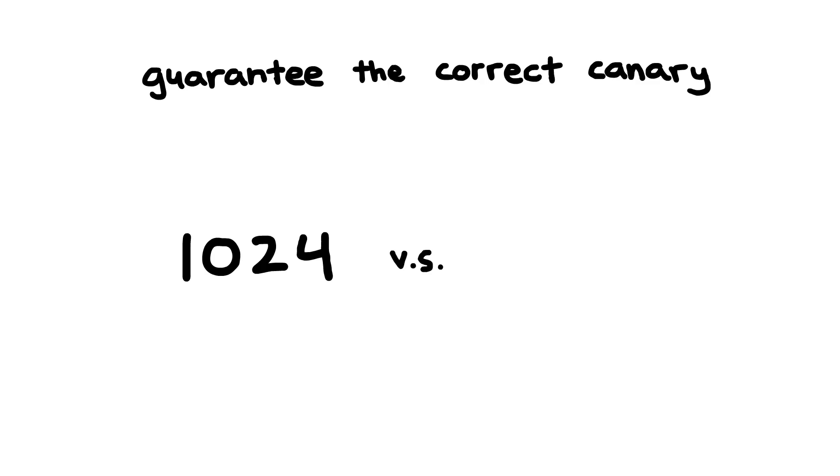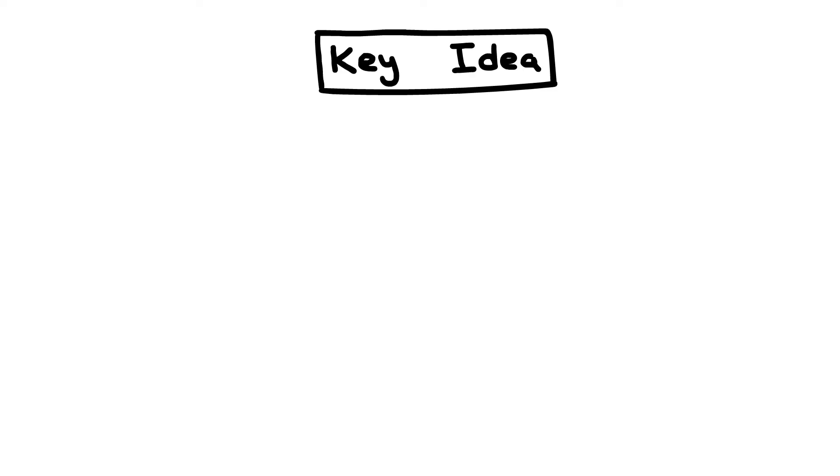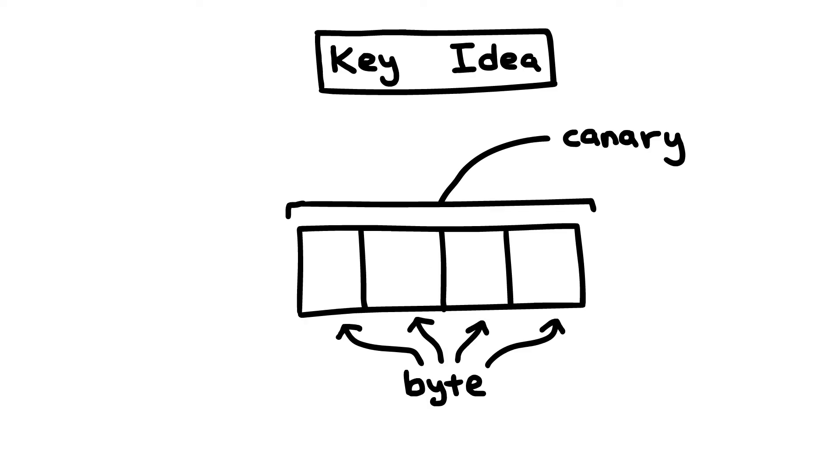Okay, the method that I'm about to show allows us to guarantee the correct canary value in at most 1024 guesses, which is a big improvement over our 4 billion from before. The big realization that we have to make is that we need to view the canary as a buffer of bytes instead of just a number. A 32-bit canary would be 4 bytes, and each byte can take a value from 0 to 255. This is how a computer represents a number internally. All 4 bytes together make up the canary.